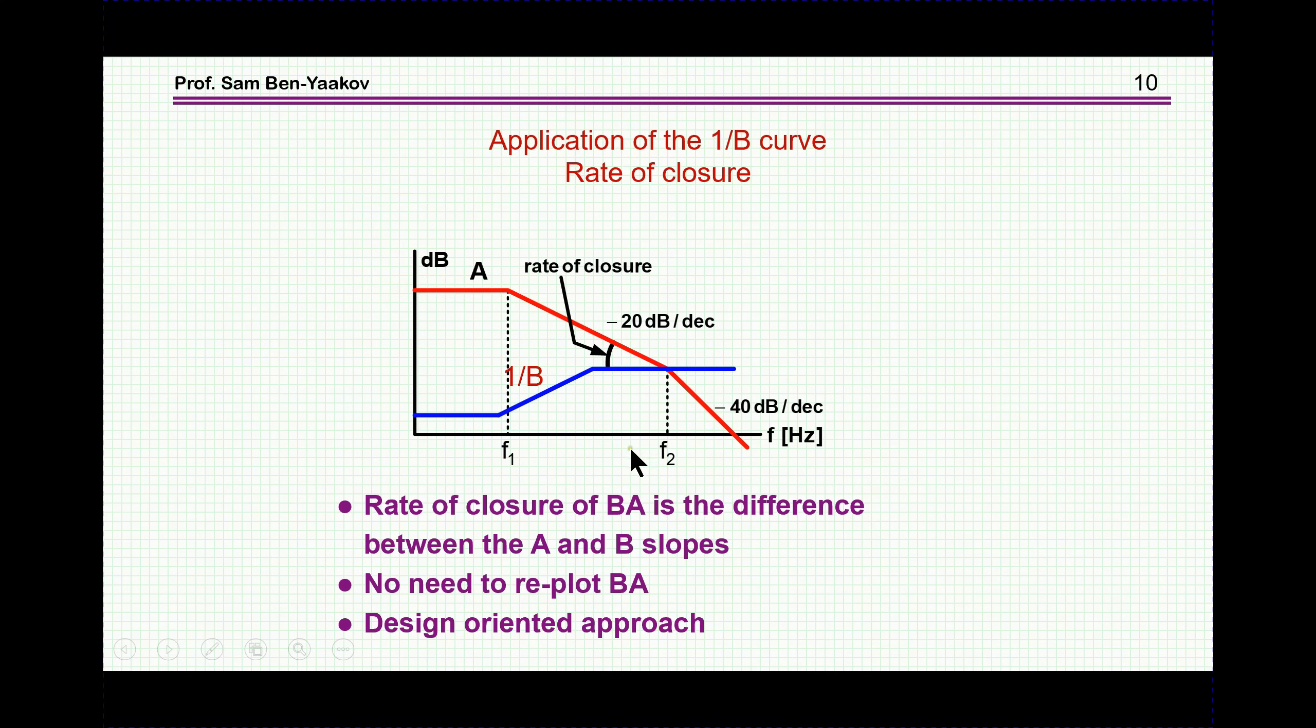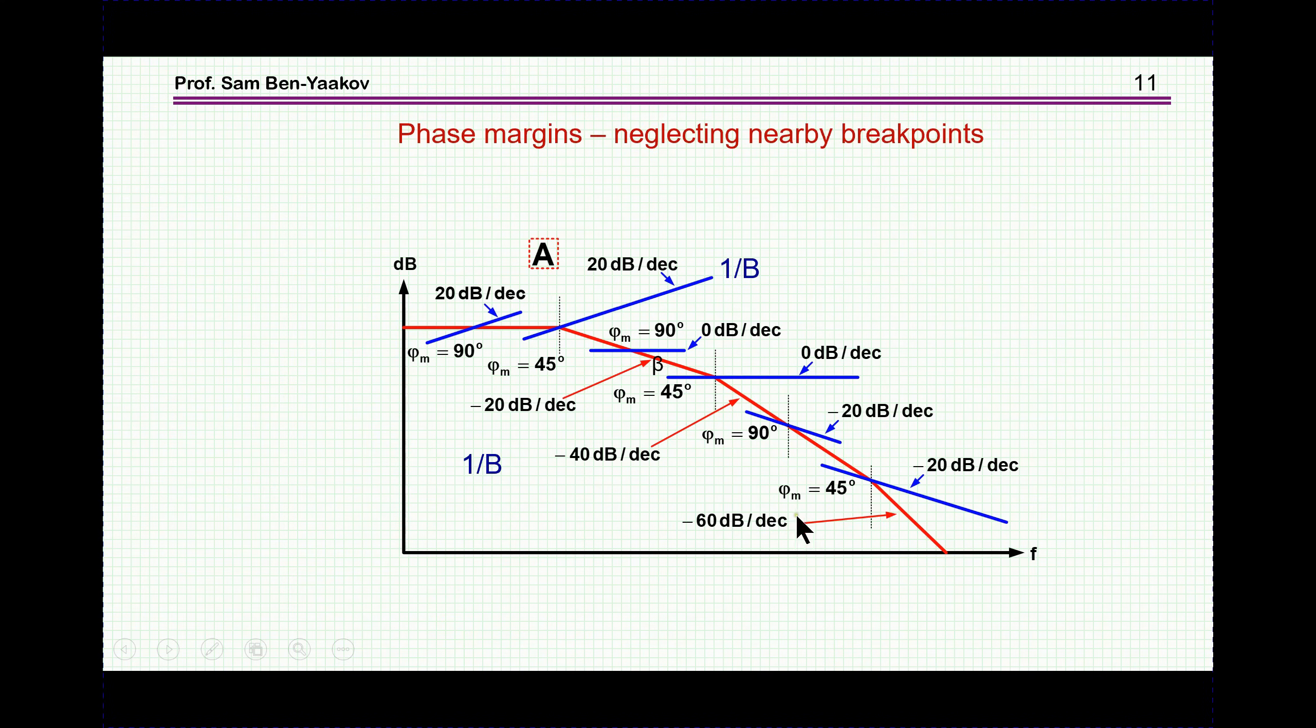So, in this case, for example, we have here A, we have 1 over B, we are crossing here at exactly the breakpoint, which means that, although this is minus 20 dB per decade, the closure rate is 20 dB per decade, but since we are crossing here at the breakpoint, then, of course, we have an extra 45 degrees of phase lag, which means that we know immediately that the phase margin here will be 45 degrees.